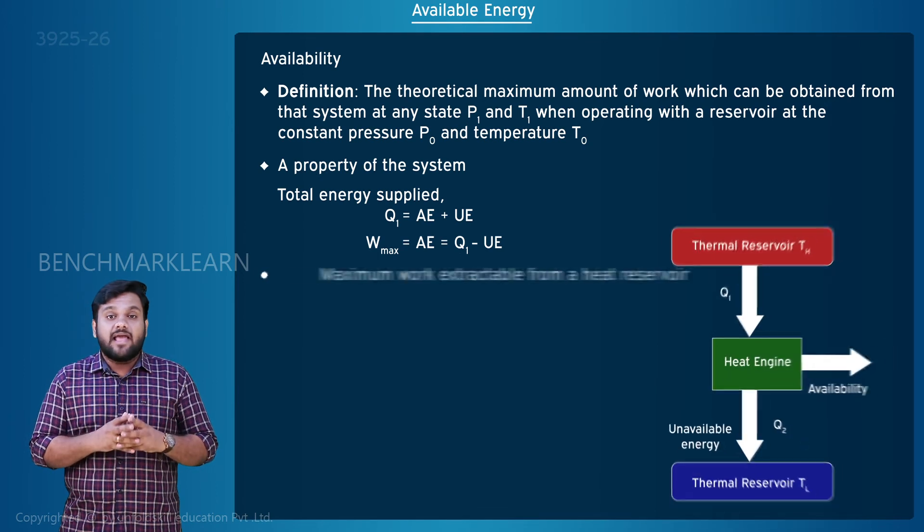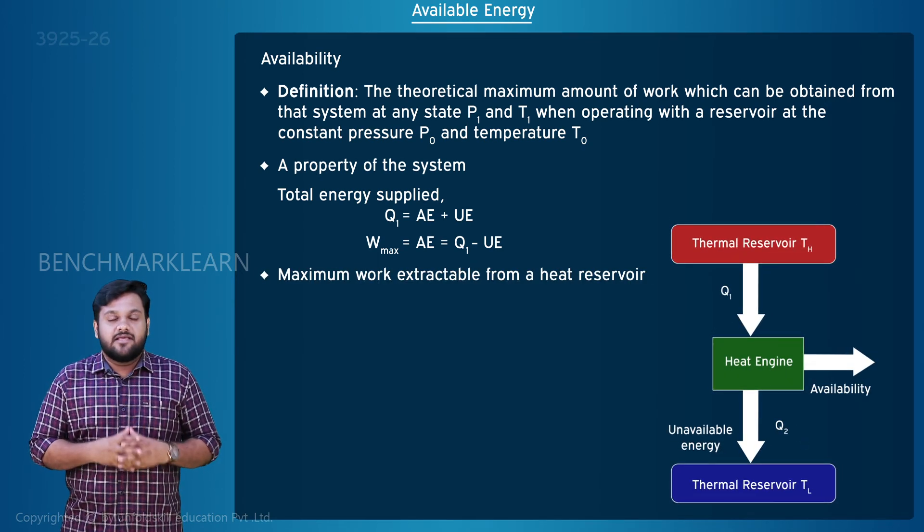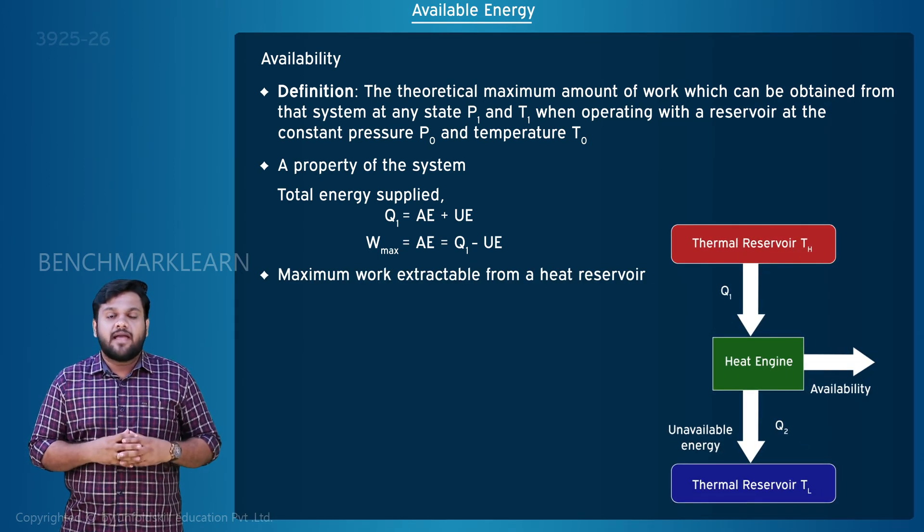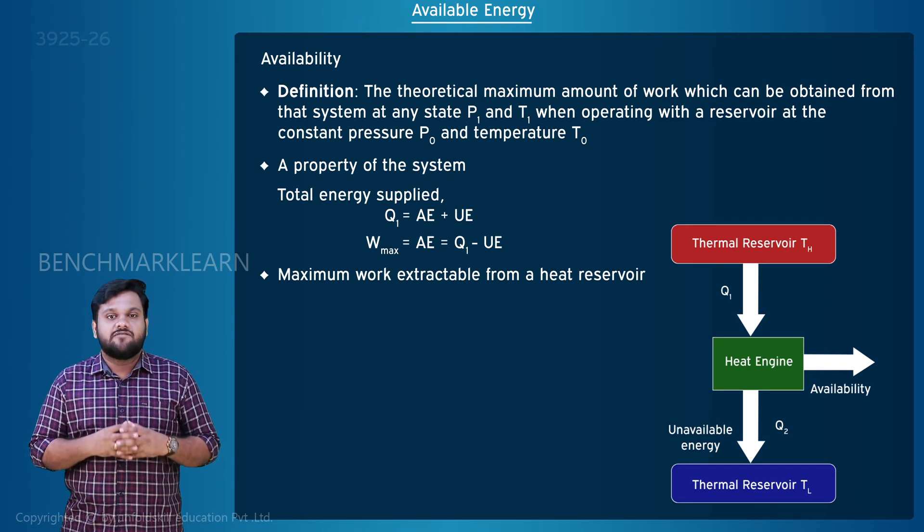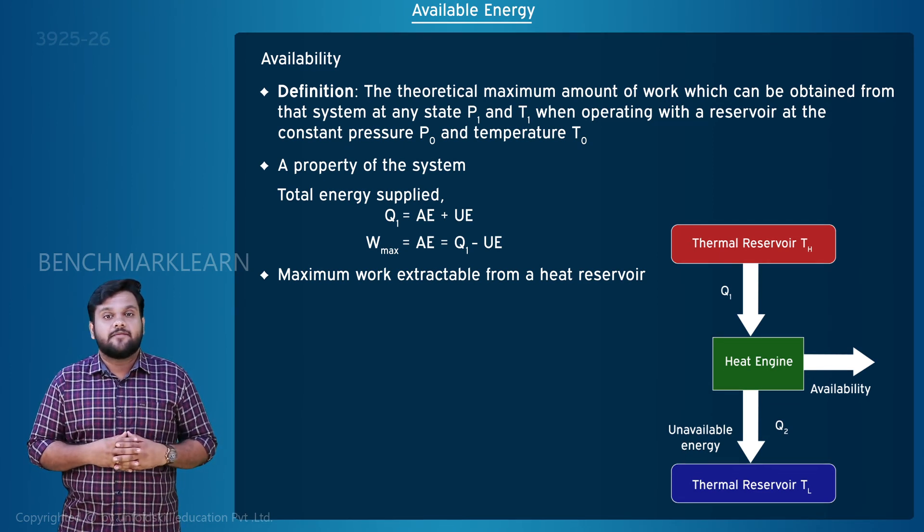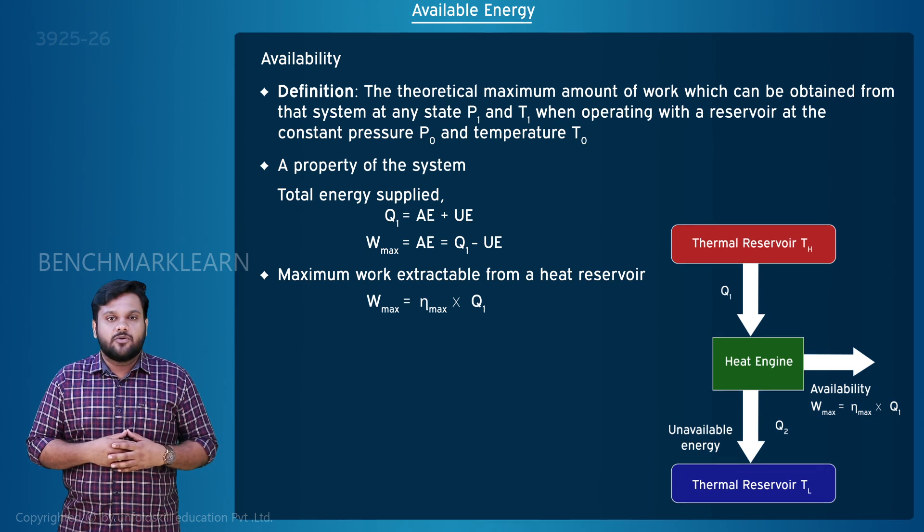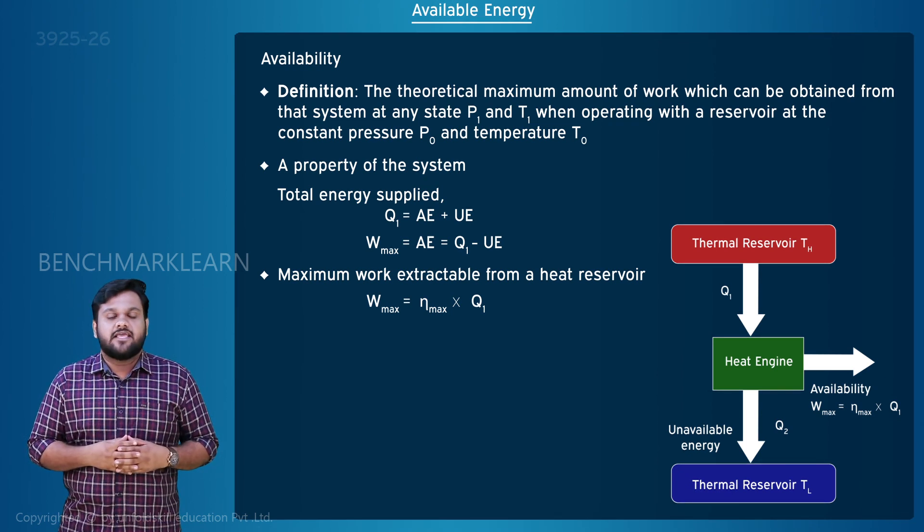This availability or maximum work extractable is equal to the product of maximum thermal efficiency of the cycle and the heat supplied. W max is equal to maximum thermal efficiency into Q1.